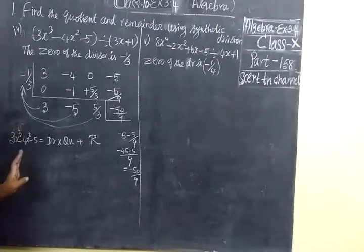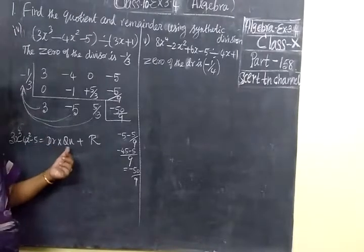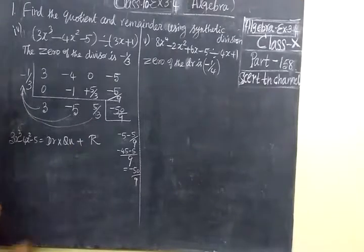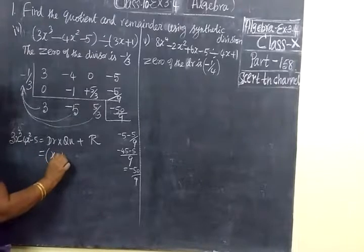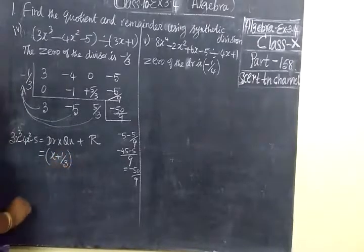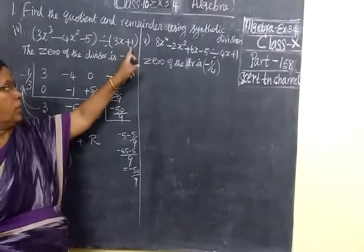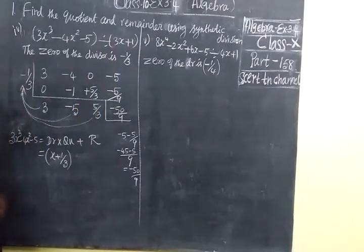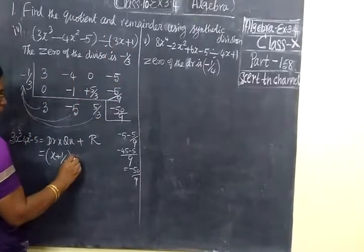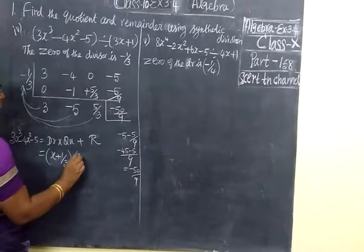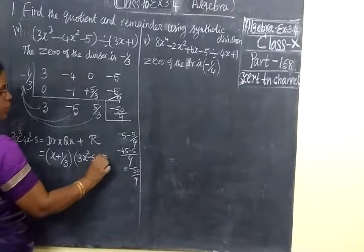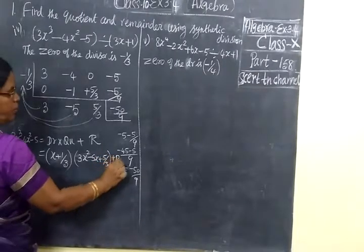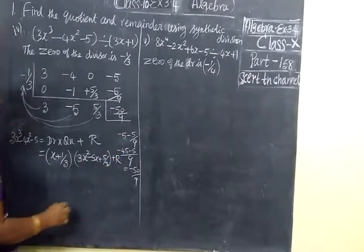Using the division algorithm here we can write: divisor into quotient plus remainder. The divisor is x plus 1 by 3. The quotient is 3x squared minus 5x plus 5 by 3, plus remainder. The remainder is this one, which we take as is.